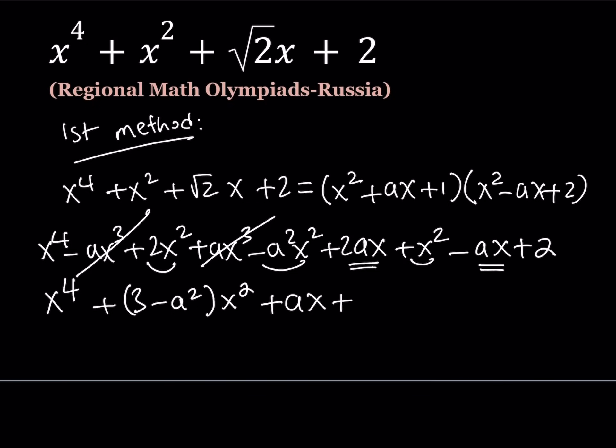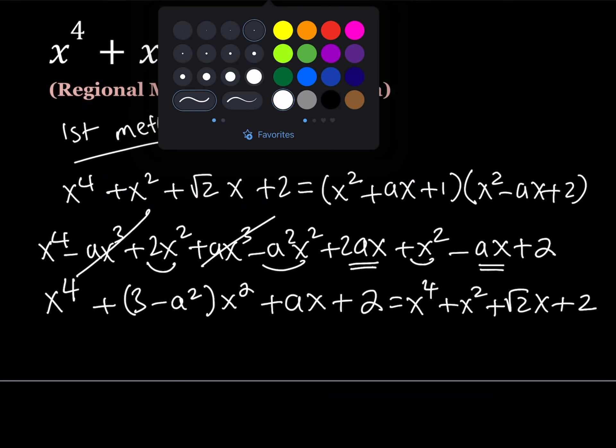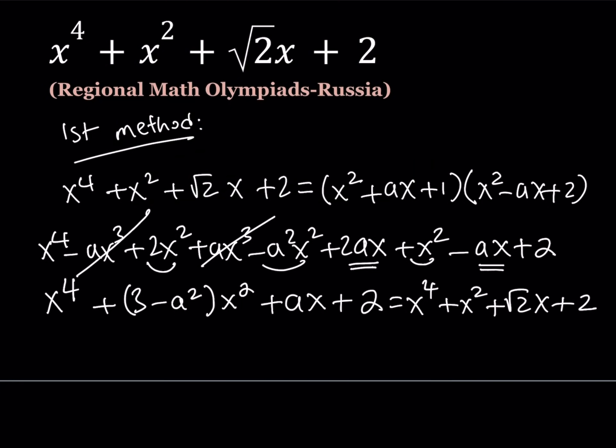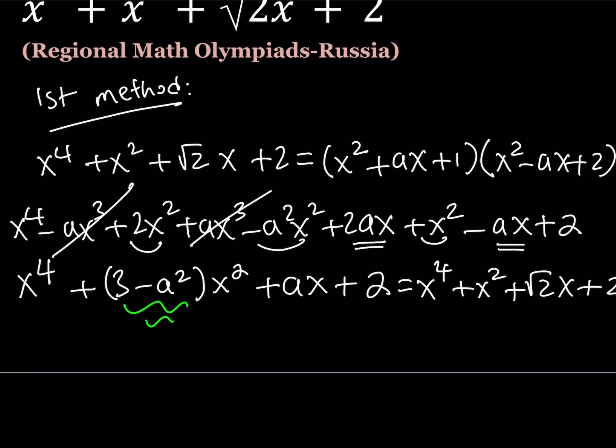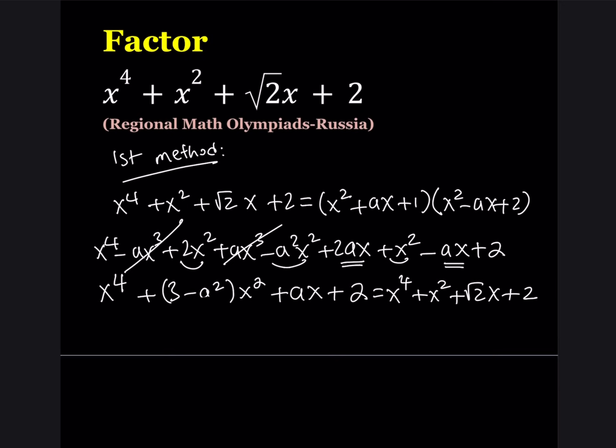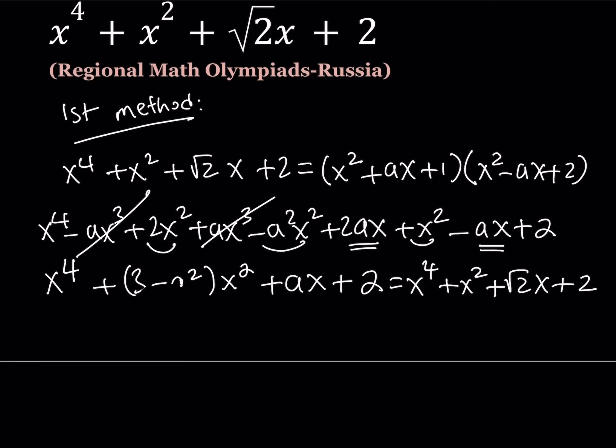2ax minus ax is just ax. And then I have plus 2 at the end. Now, this expression is supposed to equal my original one, which is x to the fourth plus x squared plus root 2x plus 2. Now, if you equate the coefficients or set them equal to each other, you'll notice that this has to be a 1. Let's clean it up a little bit. So, this is supposed to be a 1. The coefficient of x is supposed to be a root 2. The constants match and x to the fourth match.